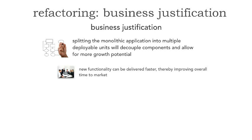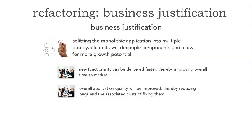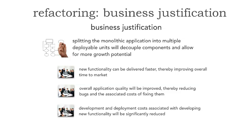I want to split the monolithic application into multiple deployable units. Here's a good business justification: new functionality can be delivered faster, therefore improving overall time to market. I can also demonstrate that overall application quality will be improved, therefore reducing bugs and the associated costs of fixing those bugs. And finally, development and deployment costs associated with new functionality will be reduced. Look at the words: time to market, quality will be improved, reducing bugs and associated costs, significantly reducing costs. This the business will pay for.